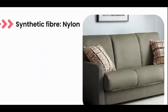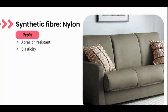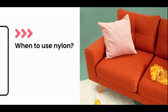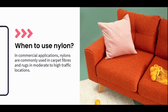Next on our list is nylon — a generic term that defines a group of synthetic fibers that are extremely strong. Nylon equals strength. Pros: abrasion-resistant, great elasticity, lightweight, and very cost-effective. Cons: fades and degrades when exposed to too much sunlight; not always associated with a luxurious mood; prone to static electricity; and not heat-resistant — it will melt at high temperatures. Nylon is commonly used in carpet fibers and rugs in moderate to high traffic locations, and can be used in commercial, domestic, and hospitality environments.